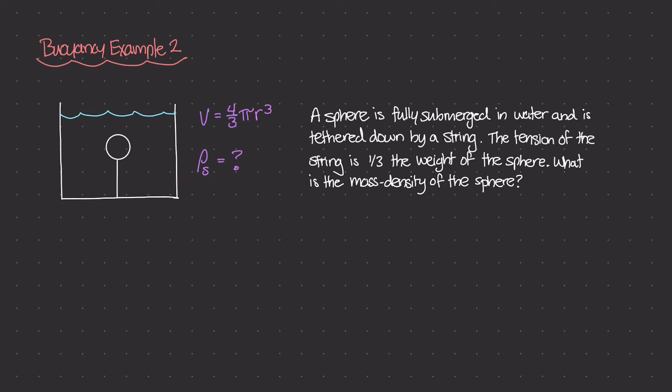I have this formula written down — this is the volume of a sphere, which is four-thirds times pi times the radius cubed. That might come in handy, and I have it written down anyway. So let's get started.